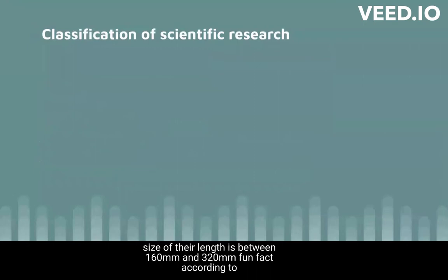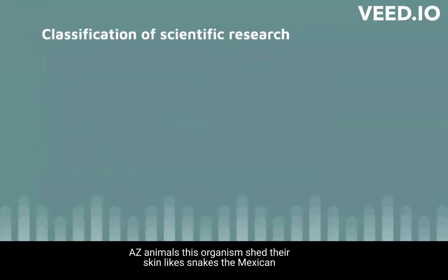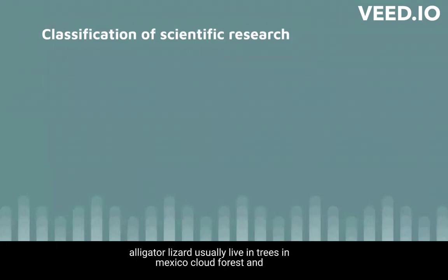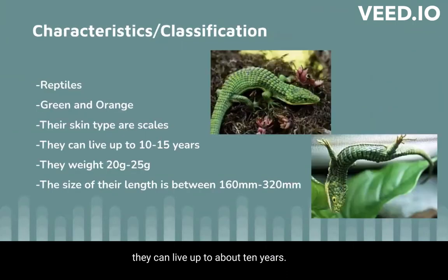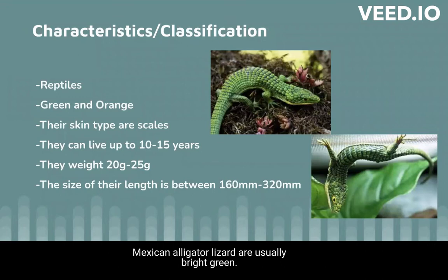And fun fact, according to AZ Animals, these organisms shed their skin like snakes. The Mexican alligator lizard usually lives in trees in Mexico's Cloud Forest and they can live up to about 10 years. Most of them eat insects. You can see on the picture that the Mexican alligator lizard are usually bright green.